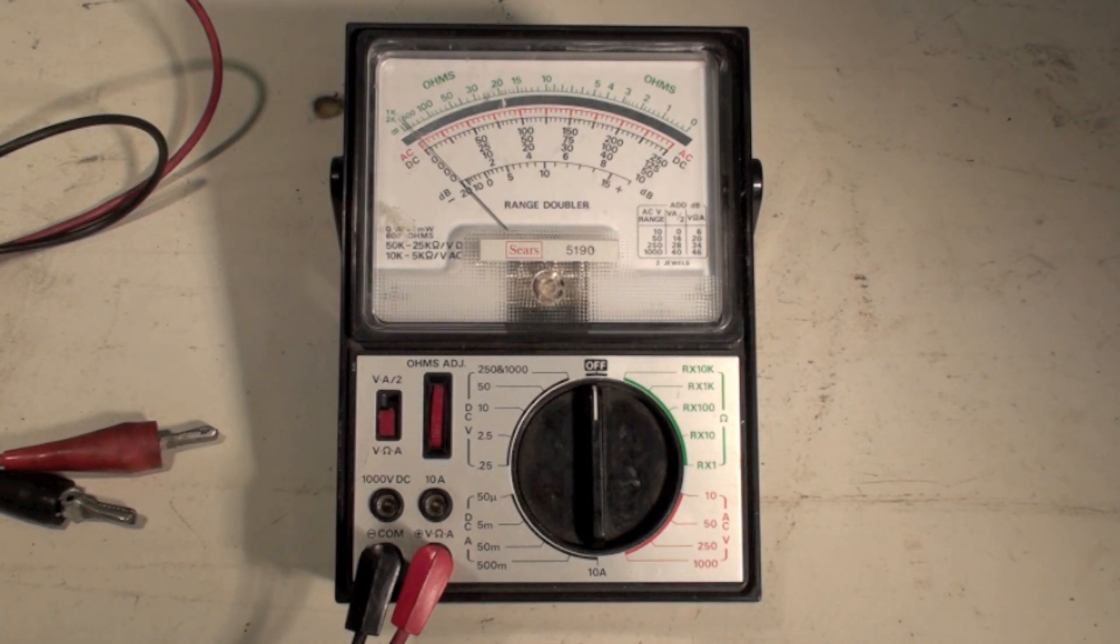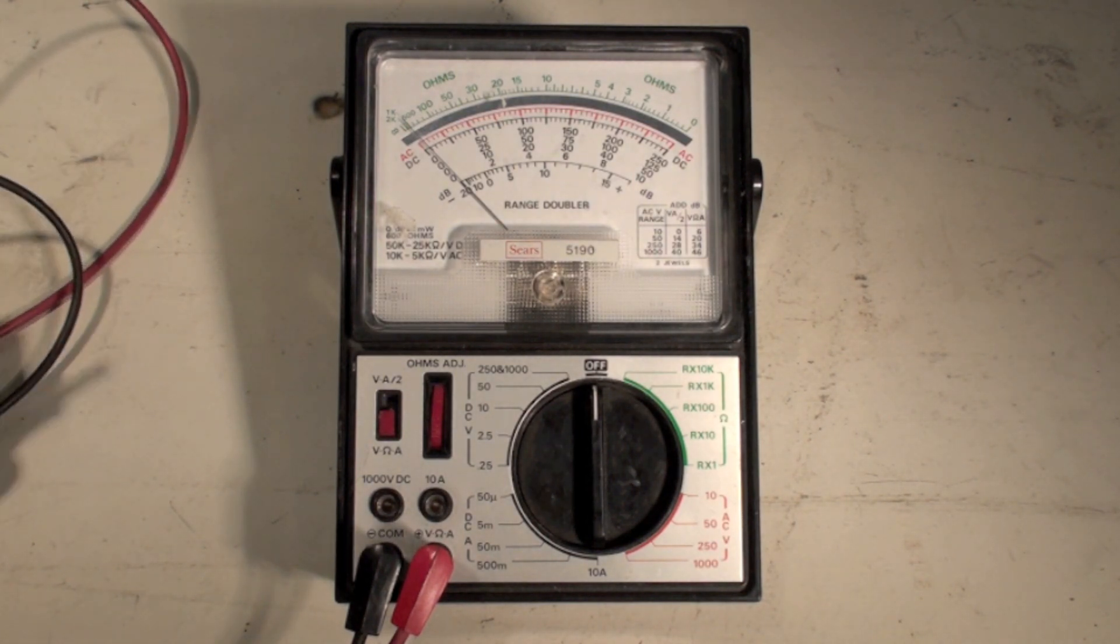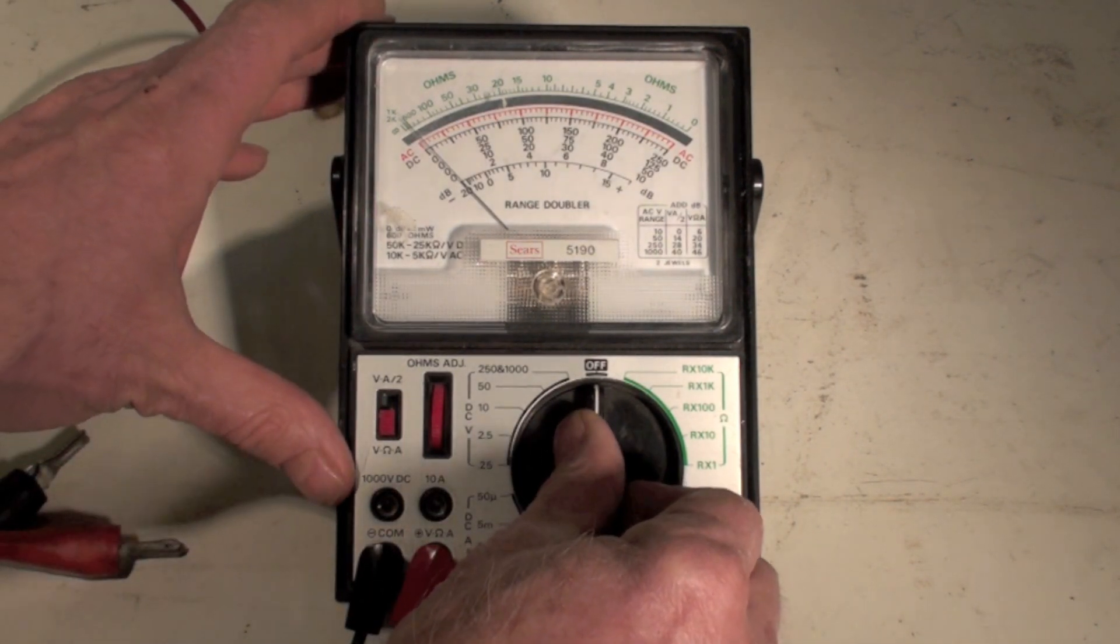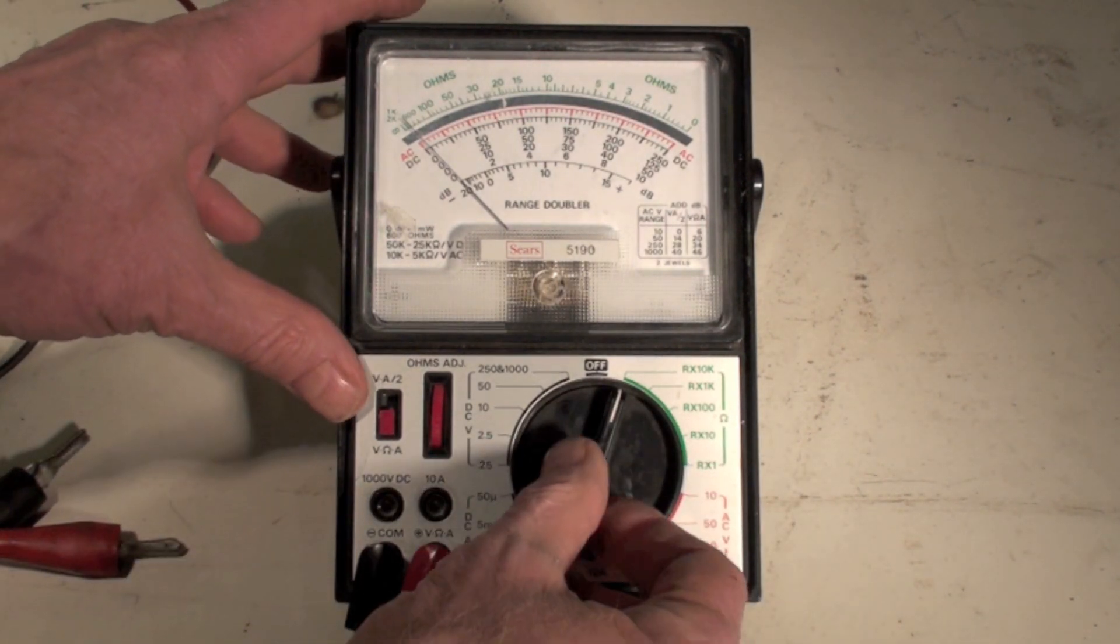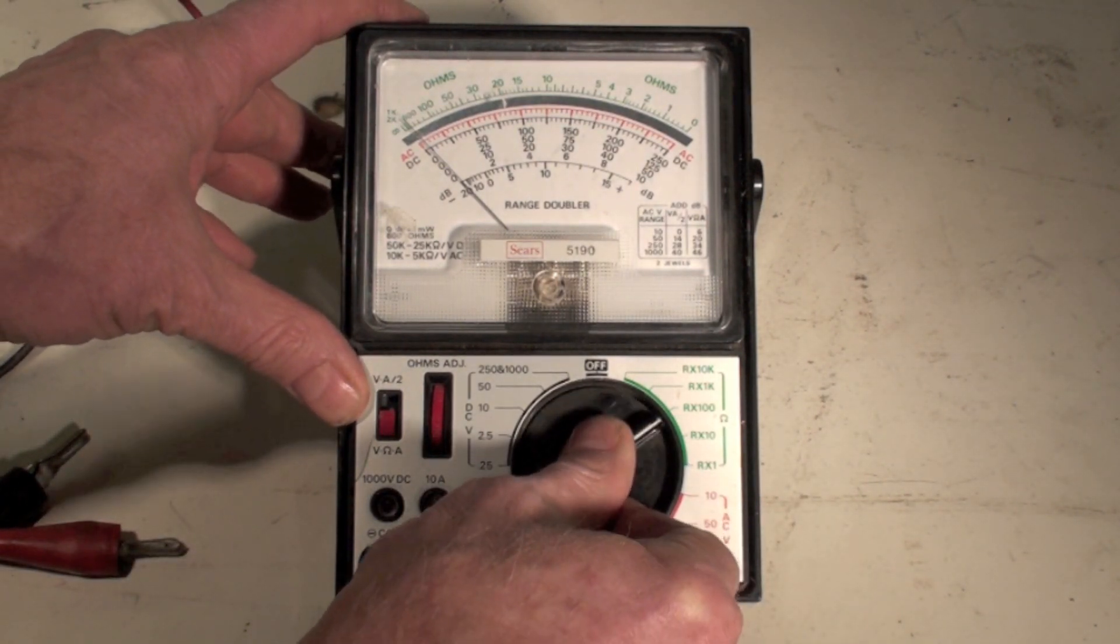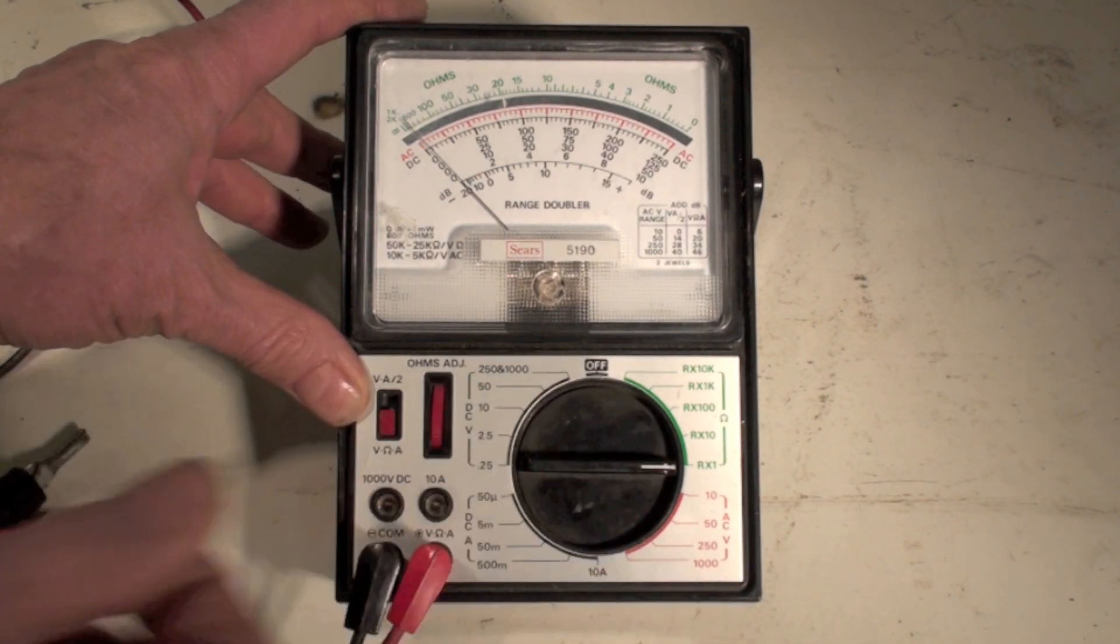So let's say I was going to check a circuit for resistance. Now, I'm in the off position here, so I'm going to have to go down here and decide which one I want to use. R times 10,000, R times 1,000, R times 100, R times 10, or R times 1.